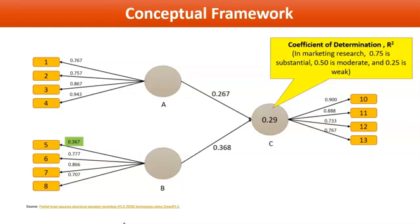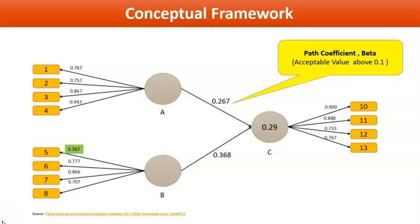Another one is showing path coefficient, in other words, we say it is beta. This slide is putting focus on path coefficient, which is the beta value. Acceptable value is 0.1, but in some cases higher value is 1.5. This slide is showing a model in which A and B are independent variables. Here you can see the arrow is pointing towards the path coefficient, which is beta from A to C. The value is 0.267. However, acceptable value is more than 0.1, which means 10 percent.